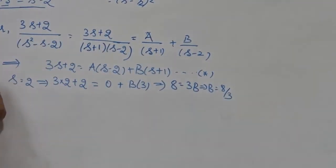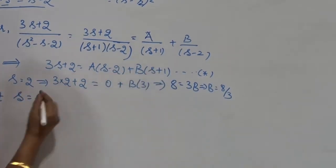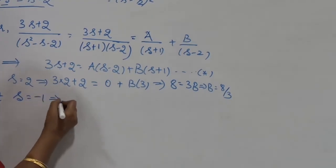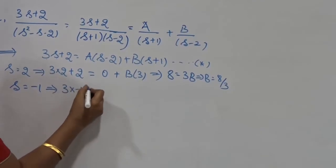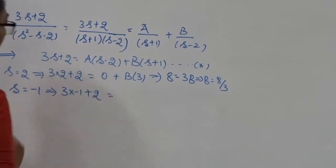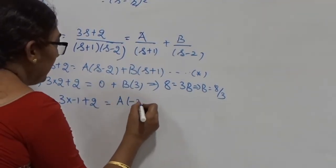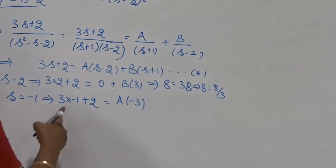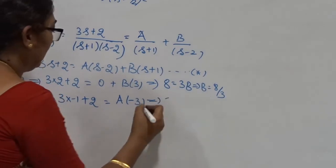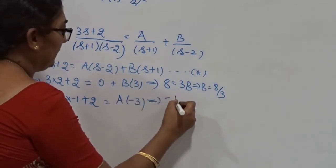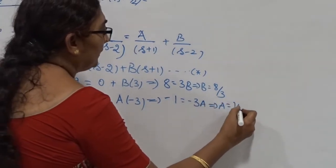Similarly, I have to calculate the A value. Therefore, put s = −1. Once you put s = −1, the B value becomes 0. Therefore: 3(−1) + 2 = A(−1 − 2), which gives −3 + 2 = −3A, so −1 = −3A. That implies A = 1/3.